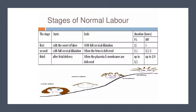The first stage is from the onset of labor to full cervical dilatation. The second stage is from full cervical dilatation to delivery of the fetus. The third stage is from delivery of the fetus to delivery of the placenta and membranes. The fourth stage is approximately one hour of observation for possible postpartum hemorrhage. In the primigravida, the first stage lasts about 12 hours and the second stage about one to two hours; in the multigravida, six hours and 30 minutes to one hour respectively. The third stage is up to 30 minutes in the primigravida and up to 15 minutes in the multigravida.